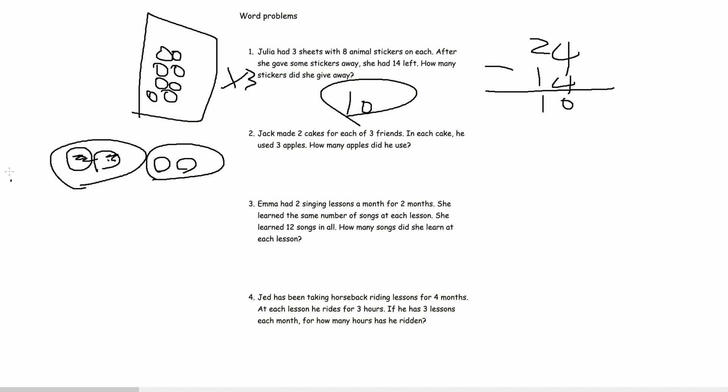So, that's 1 friend, that's another friend, and that's another friend. So, in total, he made 6 cakes. And, each of those 6 cakes, he used 3 apples. So, 6 times 3 is 18.